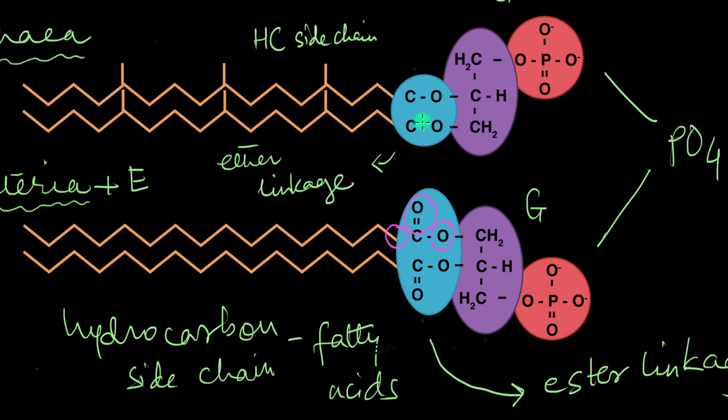If you compare the ester linkage and the ether linkage, you will see that this double bonded oxygen is completely missing from the ether linkage. So if we put this over here, then it would be an ester linkage. But since it's an ether one, there's nothing. So it's just one oxygen right here, which is attached to two carbons on either side. This is essentially what the ether linkage looks like.